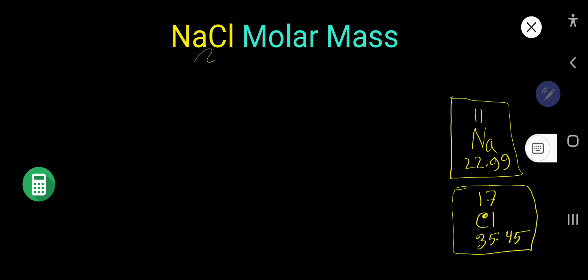If you open the periodic table, you will find the sodium element. Its atomic number is 11, and this is its average atomic weight. Average atomic weight takes into account natural abundance. This is chlorine — its atomic number is 17, and its average atomic weight or mass is shown here.